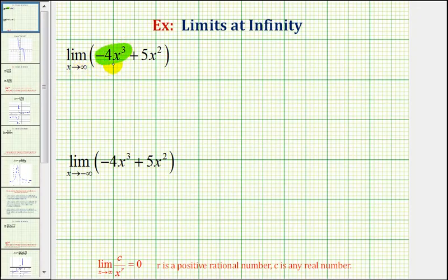As x increases without bound, x to the third is going to be a very, very large positive number. But then we have to multiply that very large positive number times negative four, making it a very large negative number. Therefore, this limit is equal to negative infinity, which we know does not exist.